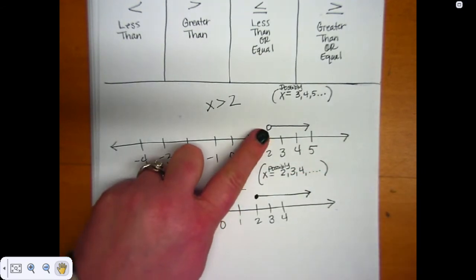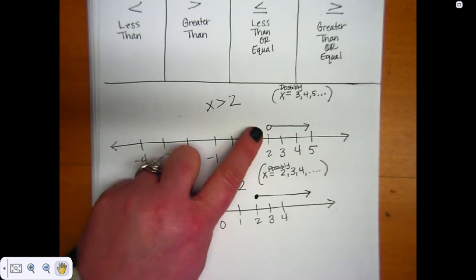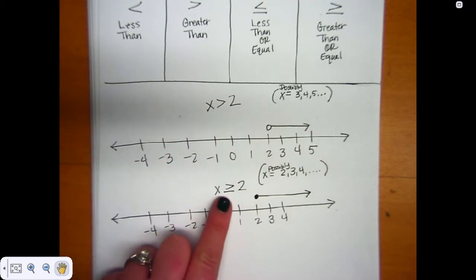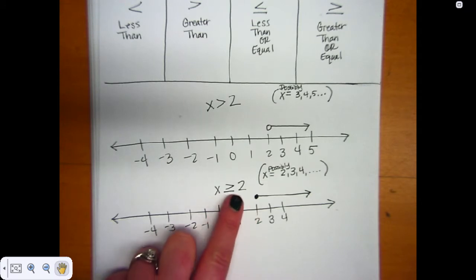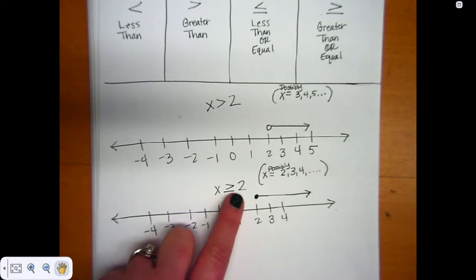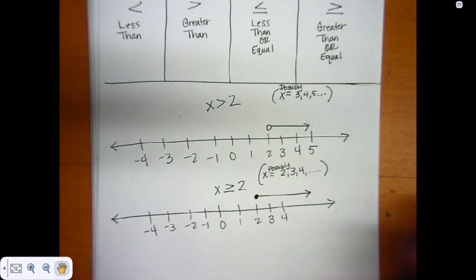So an open dot means just greater than or less than, according to what your inequality says — it's open if there's no or equal to sign. If it does have the or equal to, it should be a closed dot, because that means it also includes that number. So x could be 2, or it could be 2 million — we don't know, but it could be 2, or anything above 2.